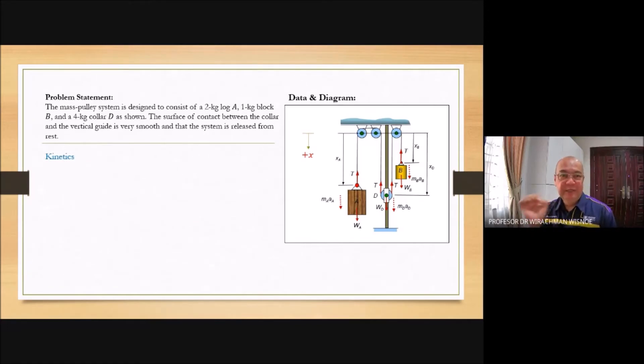Before we put the formula of kinetics, we are going to draw that free body diagram and kinetic diagram. What are the forces applied to this block A? The block has a weight. Two kilograms times G or MA times G. We have the weight. We have the tension, T. The tension of a rope when we don't have any friction of the pulley, it will be all the same. Those are the only two forces applied to log A.